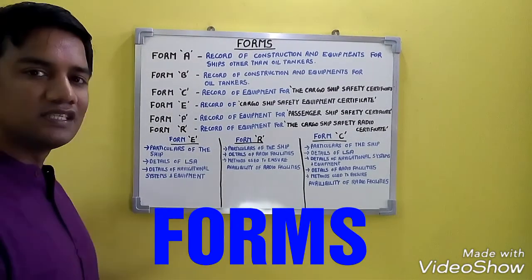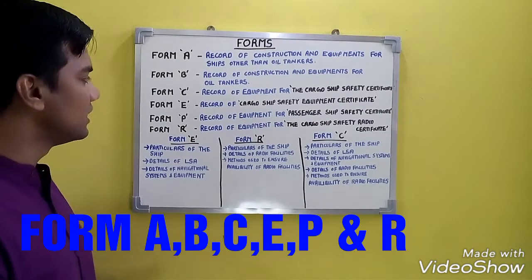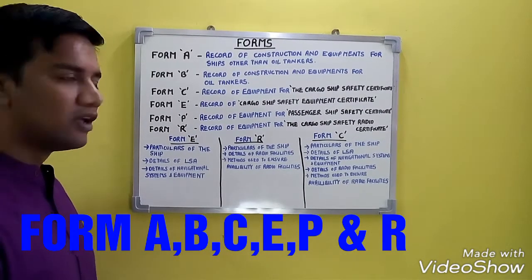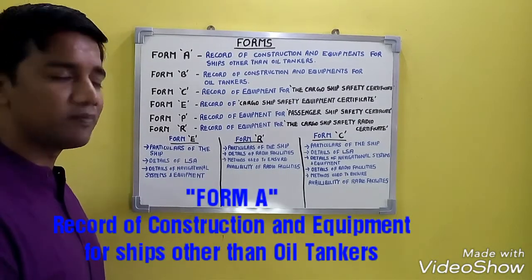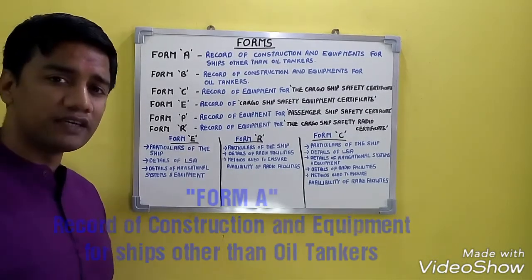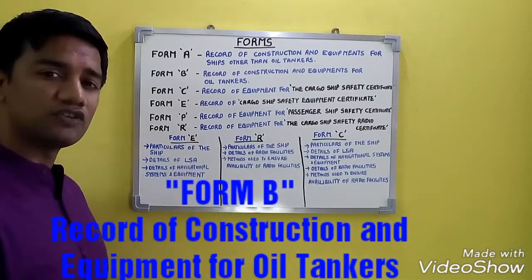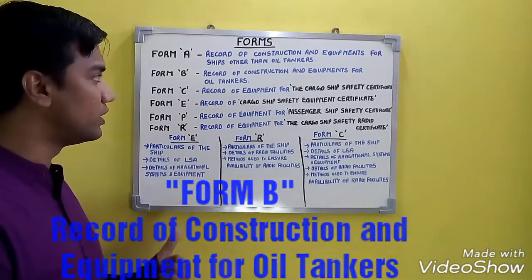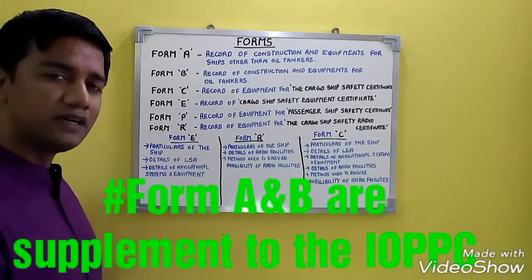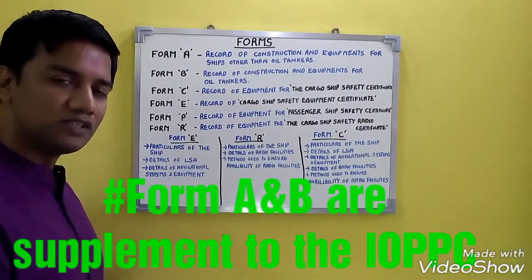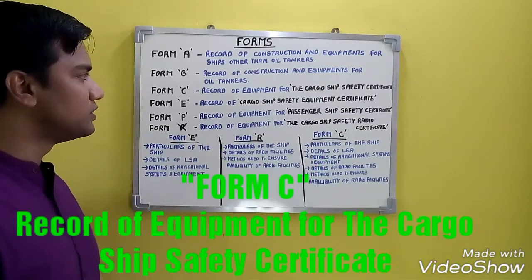Our next topic is forms. We have Form A, B, C, E, P, and R. Form A represents the Record of Construction and Equipment for ships other than oil tankers. Form B represents the Record of Construction and Equipment for oil tankers. Form A and B are supplements to the International Oil Pollution Prevention Certificate.